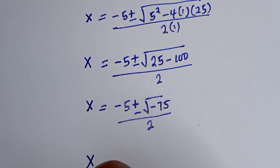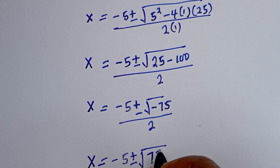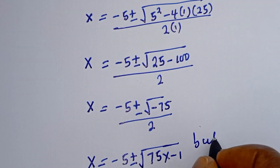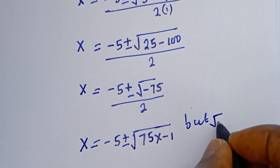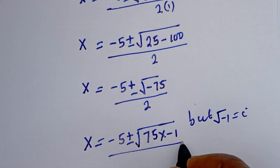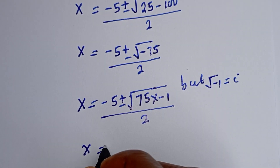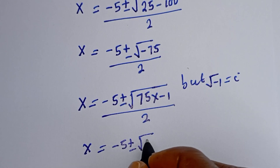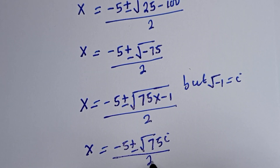Then S is equal to negative 5 plus or minus square root of 75 multiplied by negative 1. Since the square root of negative 1 is equal to i, S is equal to negative 5 plus or minus square root of 75 times i, over 2.